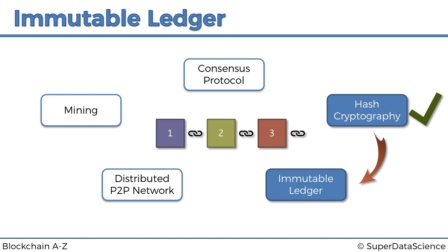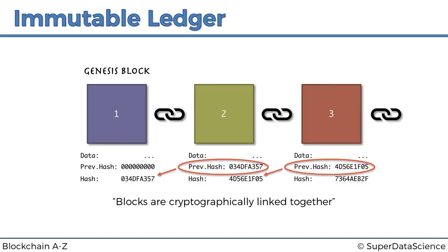So what is the immutable ledger? To start off, let's look at where we left off last time. We discussed that in a blockchain, blocks are cryptographically linked together — that's where the chain is actually formed — and we discussed how that works.